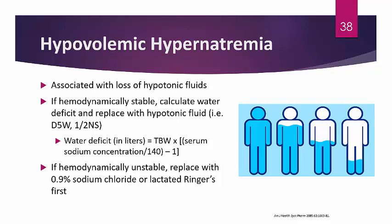With an isotonic fluid, more volume reaches the intravascular space than with D5W or half-normal saline, which is critical for hemodynamically unstable patients with hypotension from low blood volume. Don't worry about the hypernatremia initially — give resuscitation fluids first, then return to correcting hypernatremia once the patient is hemodynamically stable.